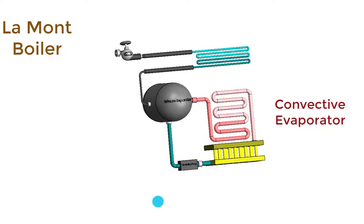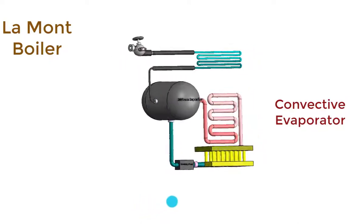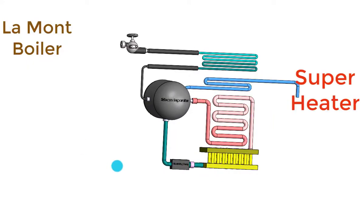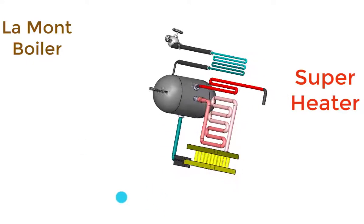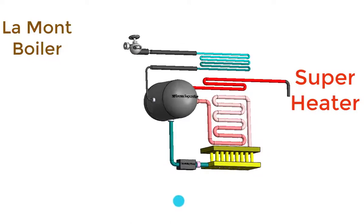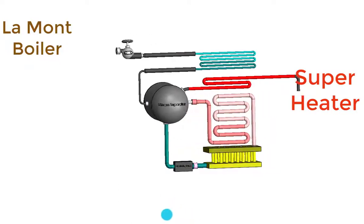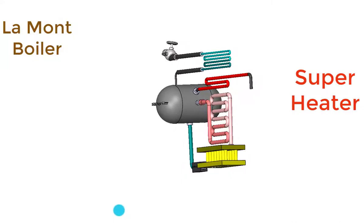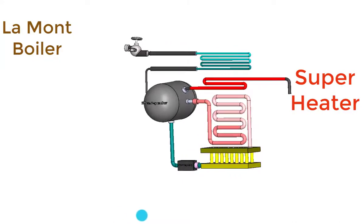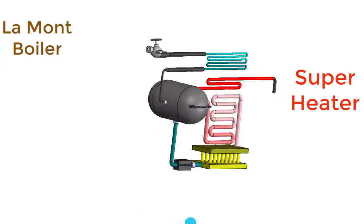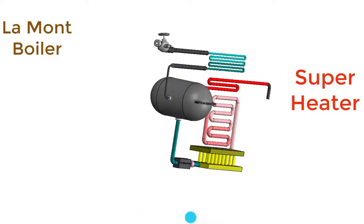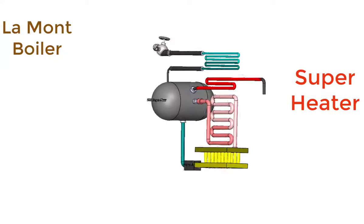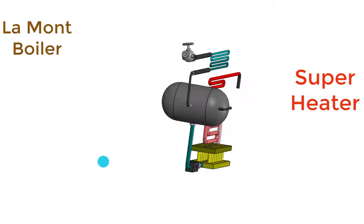The steam from the steam separating drum now enters into the superheater. This is the superheater. From the steam separating drum, steam enters the superheater tubes and is superheated by the hot flue gases passing over them. This superheated steam goes to the turbine for developing mechanical power.